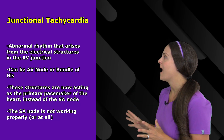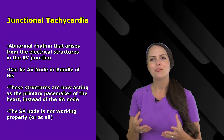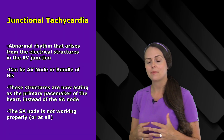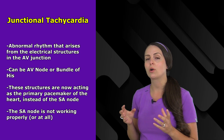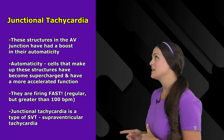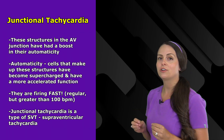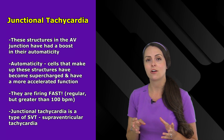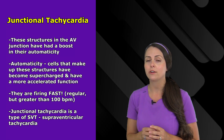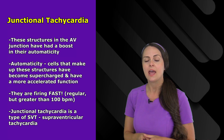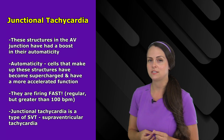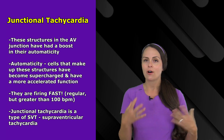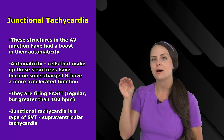These electrical structures are now acting as the primary pacemaker of the heart, where normally our sinoatrial node or SA node usually acts as our primary pacemaker. But in this case, it's either working too slow or not working at all, and these electrical structures in the AV junction have an increased automaticity, meaning they are firing extremely fast. In junctional tachycardia, our heart rate needs to be regular but greater than 100 beats per minute. Junctional tachycardia is a type of SVT — supraventricular tachycardia — because it originates above those ventricles.